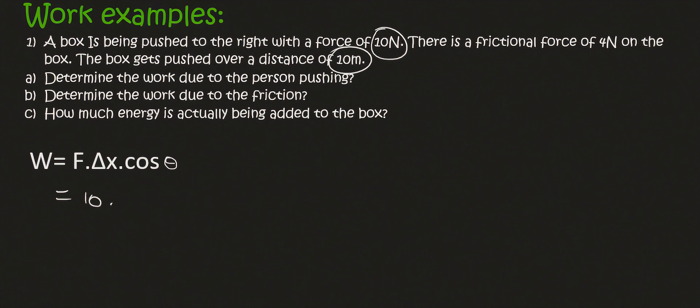The displacement, or distance, is going to be 10. Now if you have a box that is being pushed to the right, it's obviously going to be moving to the right, and the person is also going to be pushing to the right. So the angle between those two is 0 degrees.